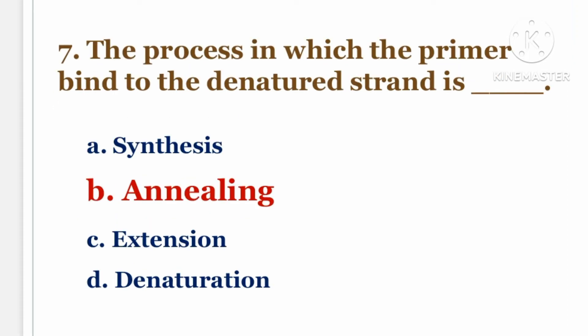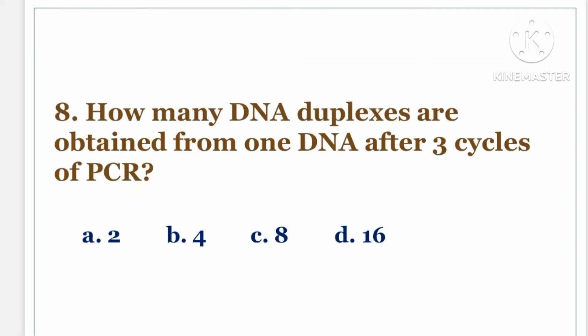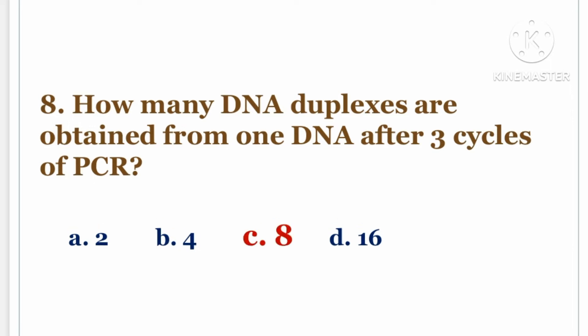Next question. How many DNA duplexes are obtained from one DNA after three cycles of PCR? The options are A. 2, B. 4, C. 8, D. 16. The answer is C. 8.